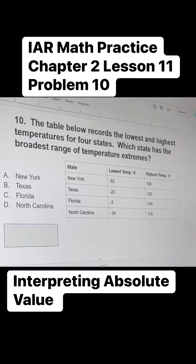This is problem number 10, chapter 2, lesson 11. The table below records the lowest and highest temperatures for four states. Which state has the broadest range of temperature extremes?